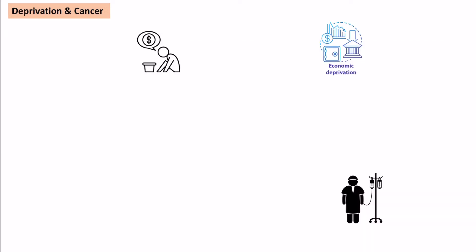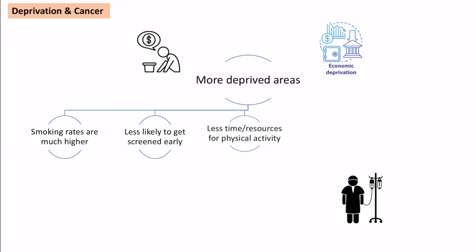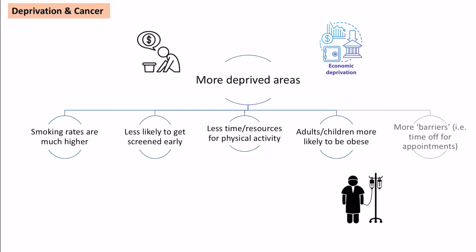Specific deprivation factors drive higher cancer levels. Smoking rates are higher in deprived areas, often seen as a coping mechanism when people are poor. People are less likely to get screened early, perhaps due to lack of resources. There is less time and fewer resources for physical activity, leading to more sedentary lifestyles and obesity — which is higher in both adults and children in deprived areas. There are also more barriers to getting time off for appointments.